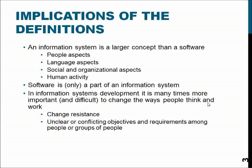Anyway, the information system is a larger concept than software. It includes people aspects, language aspects, social and organizational aspects, and human activity. Basically, it also takes into account the fact that people don't always know what to do. People may not understand instructions, and people may actually purposely do harmful things to the system.